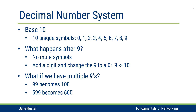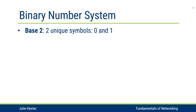This is all pretty intuitive to us because we do it so often in the decimal number system, and the binary number system works the same way. The difference is that in the binary number system we only have two unique symbols: zero and one.